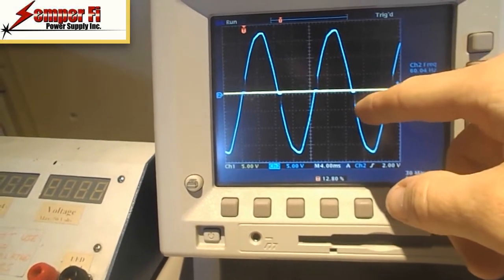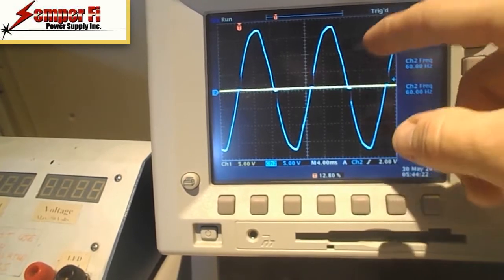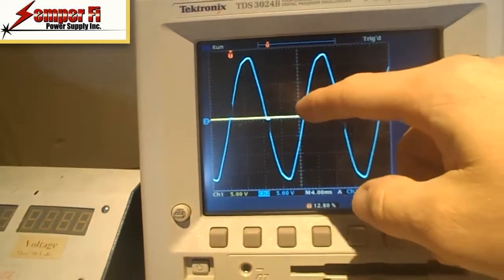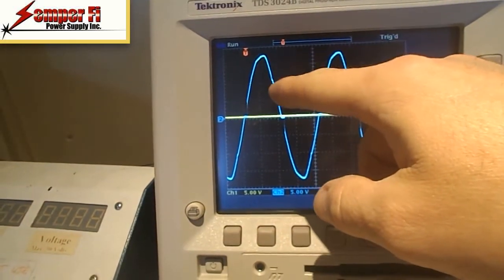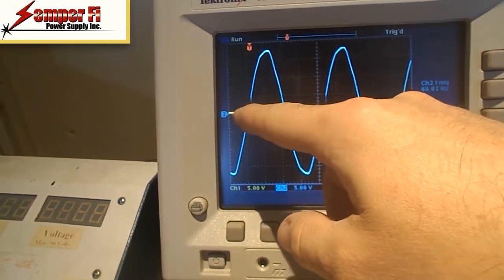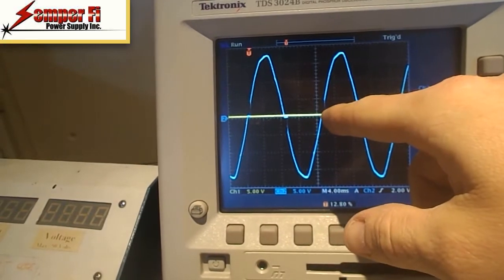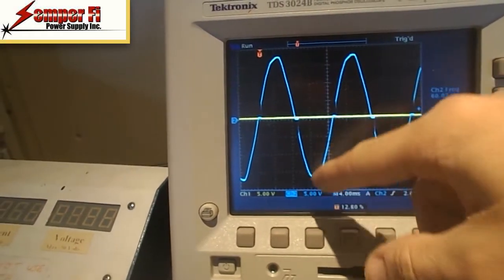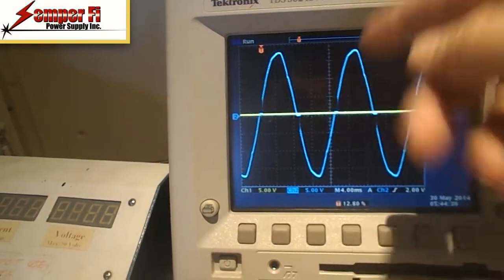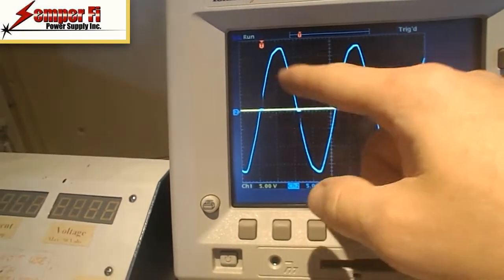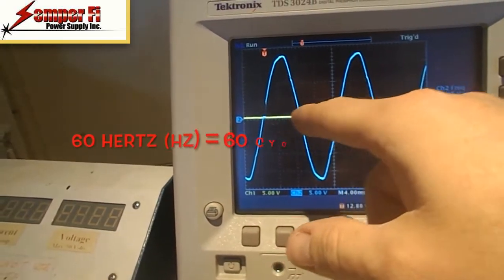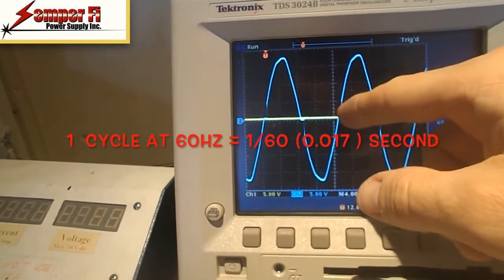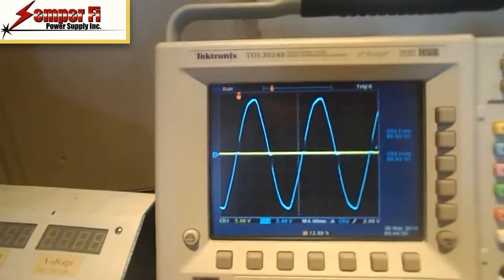This is a 60 Hertz cycle, so this cycle right here from zero over to zero—because it goes 0, 90, 180, 270, 360 degrees. 360 is back to zero, so that's one Hertz. So 60 Hertz is 60 cycles a second, which means that's one sixtieth of a second.